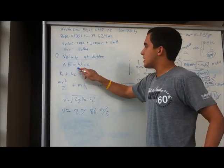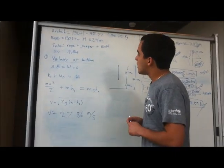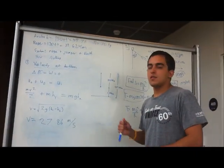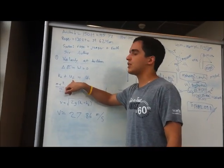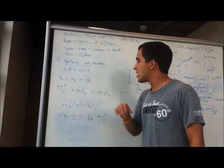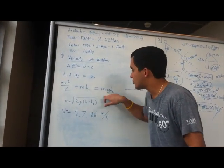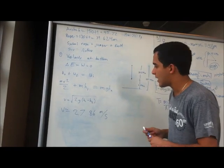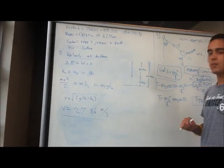The change in energy equals the work, which equals zero because the system is isolated. The initial state has potential energy and the final state has potential and kinetic energy. Here we put it in terms of variables and solving for V we get that the velocity is 27.86 meters per second.